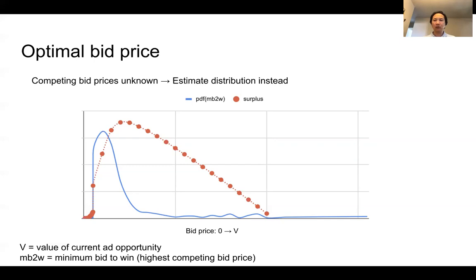So we have to look into the past, look at how we bid in history and whether we lost or we won, and use this relationship to build a distribution of winning prices. Based on this distribution, we can calculate the expected surplus for each bid price, then find the optimal bid price that maximizes the surplus.